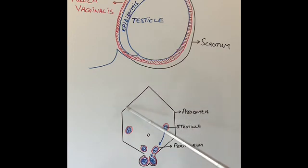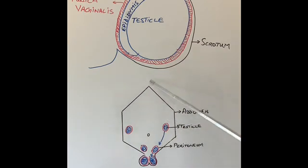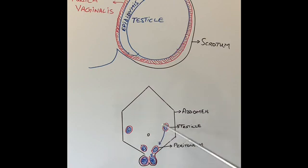So this is an abdomen of a man. That is our navel or the belly button or the umbilicus. Testicle, when the fetus is growing in the mother's tummy, is formed inside the abdomen. And those are the two testicles I've drawn, the right testicle and the left testicle.